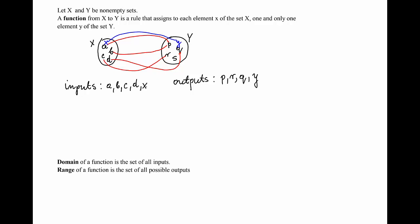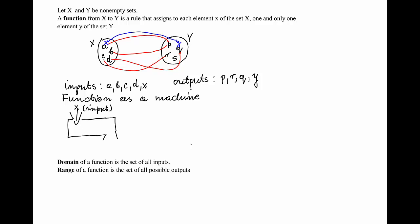Now why are they called inputs and outputs? It is often useful to visualize the function as a machine that takes x as input and returns y as the output. I like to refer to the function as a vending machine. In comes the input, the rule is performed — something is done to the x — and out comes the y, which is the output.